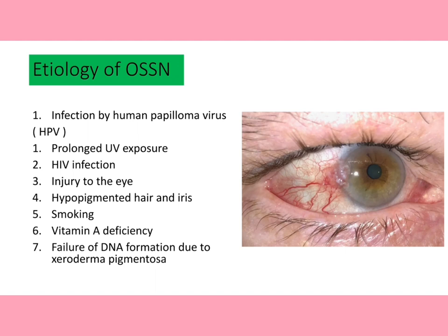The etiology of OSSN includes infection by human papillomavirus, prolonged sun exposure, HIV infection, previous injury to the eye, hypopigmented hair and iris, smoking, vitamin A deficiency, and failure of DNA repair in conditions such as xeroderma pigmentosa.